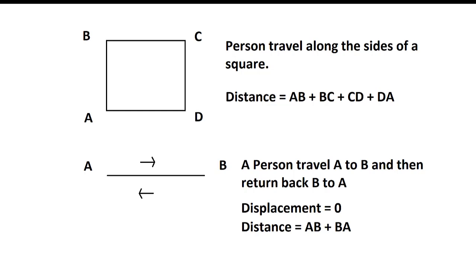Difference between distance and displacement: Distance is the total path traveled by the object — add up of all small distances covered. For example, 3 meter + 2 meter + 5 meter gives total distance. Displacement is final position minus initial position. Suppose final position is 10 meter and initial position is 2 meter, then displacement = 10 - 2 = 8 meter.